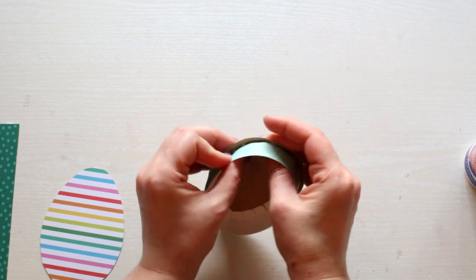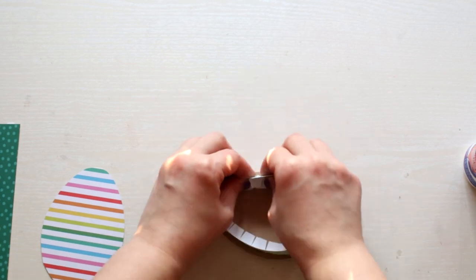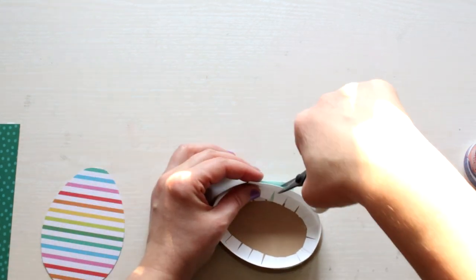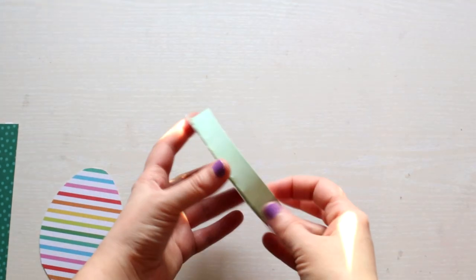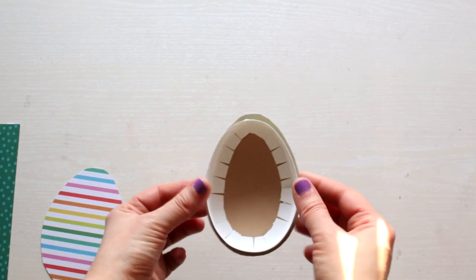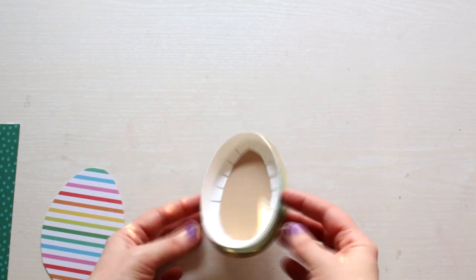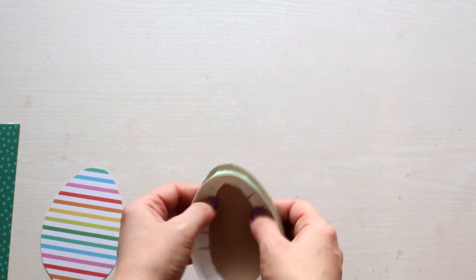When you reach the end you can trim the excess paper and glue the sides together. This will be the lid. Now we need to make the other side of the box.